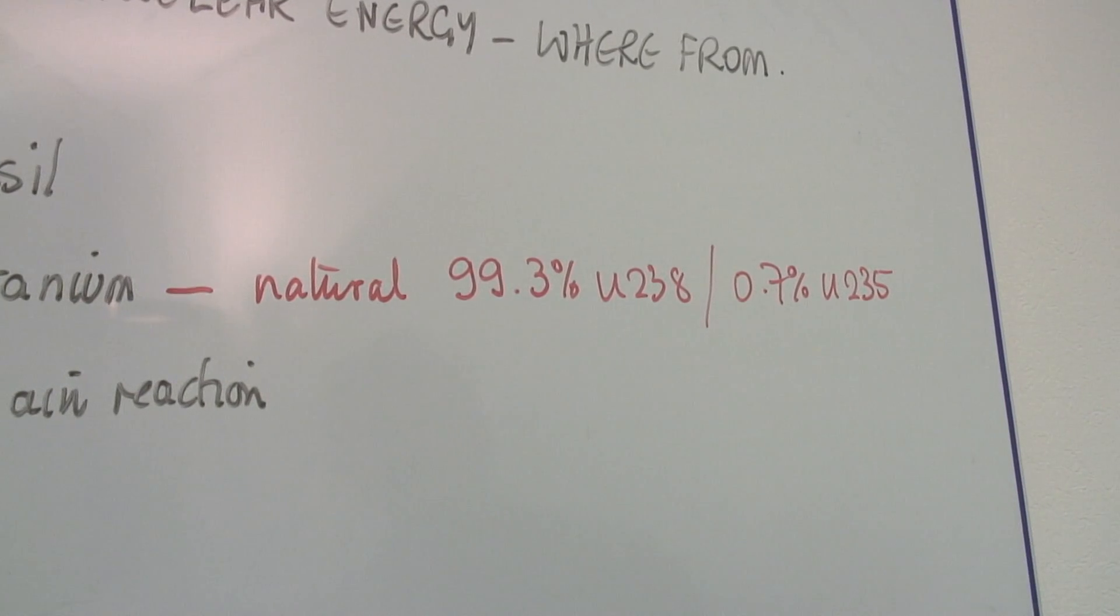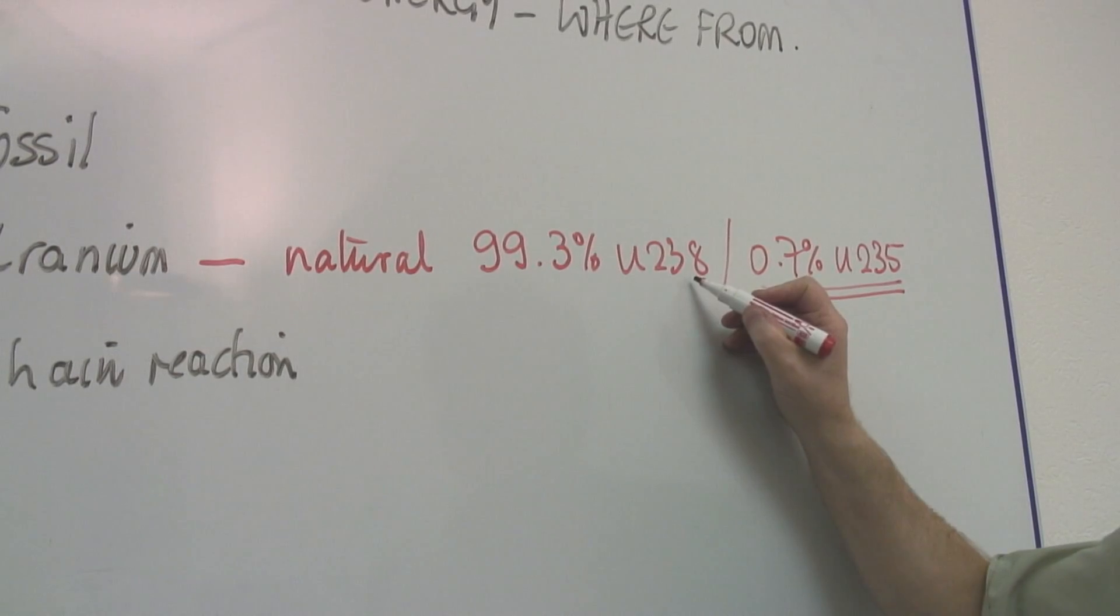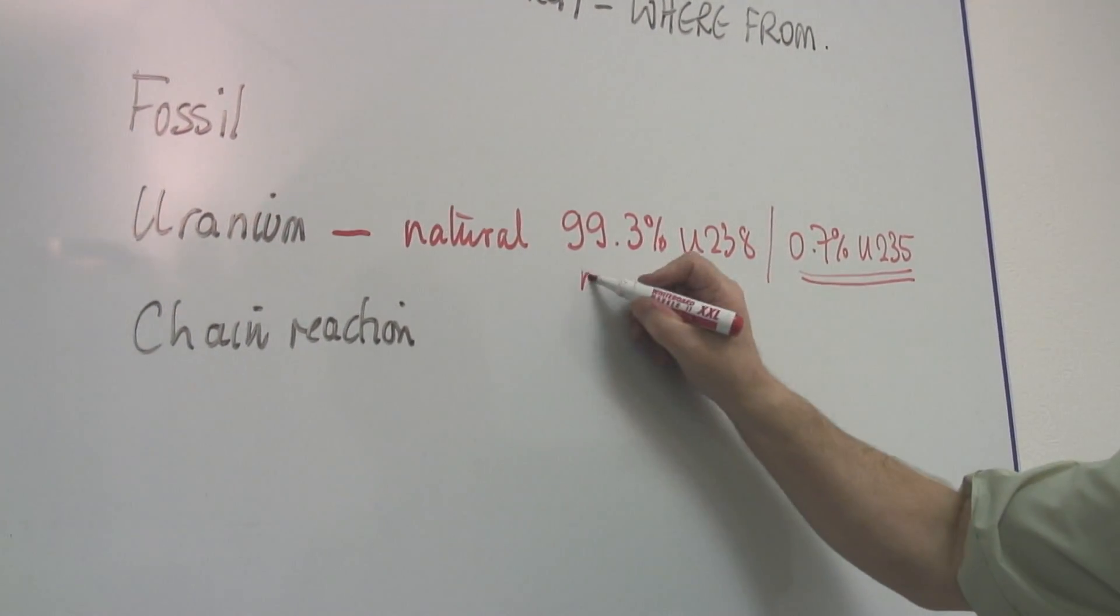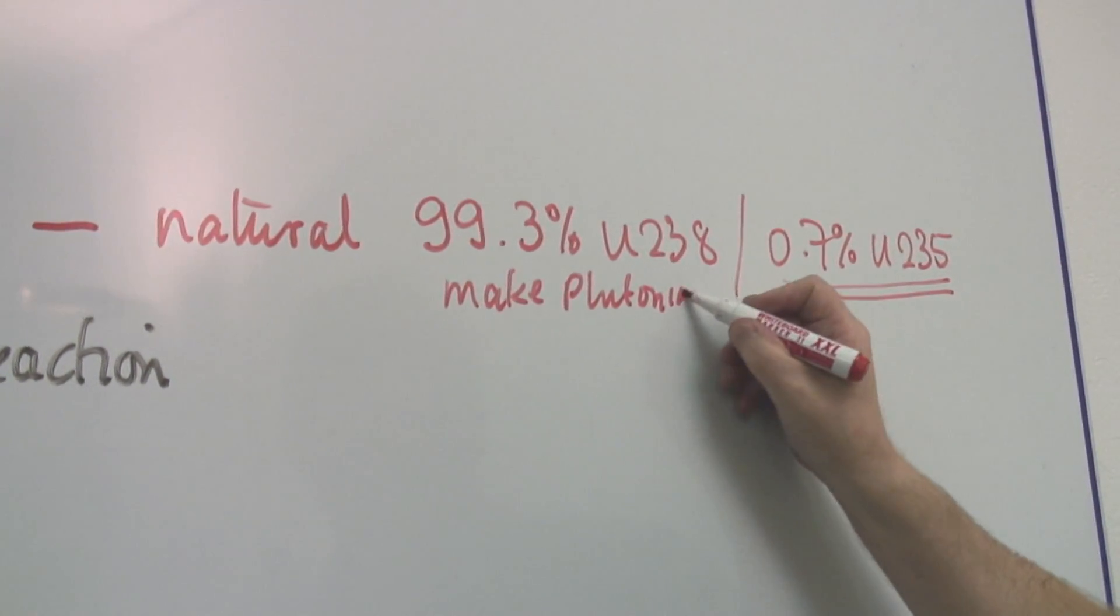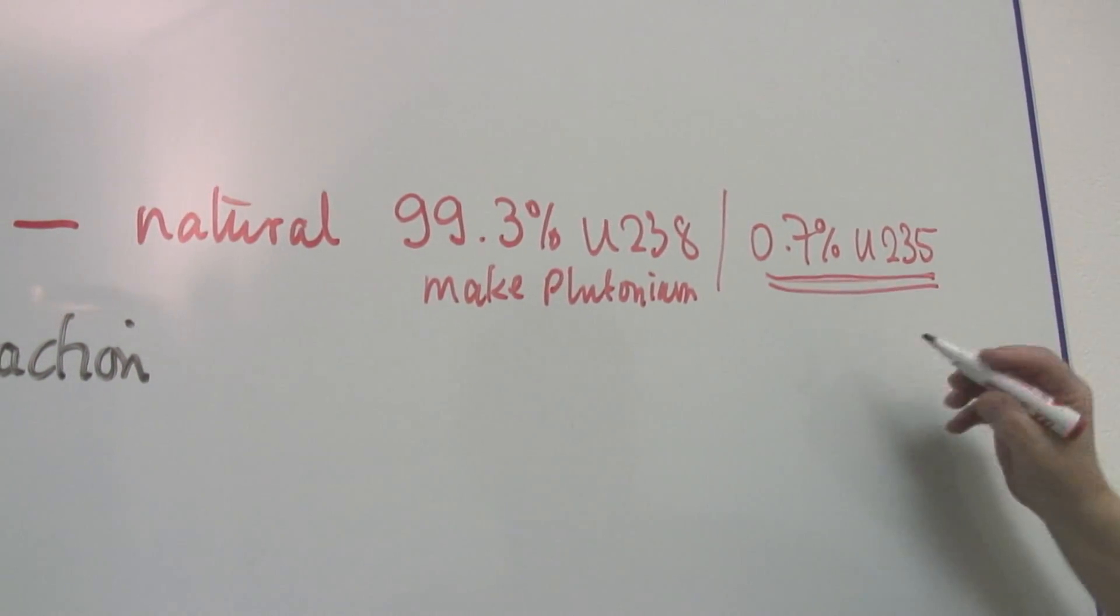This is a problem because this is the uranium we want. This we don't, or not at the moment anyway. From this we can make plutonium and therefore that can then be used in reactors. But this is the material we want.